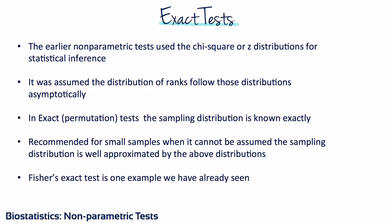The previous nonparametric tests that compare groups invoke the chi-square or z-distribution for hypothesis testing. The distribution of ranks asymptotically approaches those parametric distributions, and it was assumed the approximation was close enough for the test to be valid. For exact tests, the sampling distribution is known exactly and there is no need to rely on asymptotic properties. When the samples are very small and the approximation cannot be trusted, the exact test is recommended.